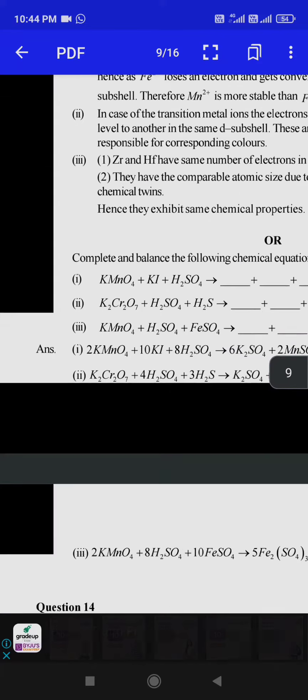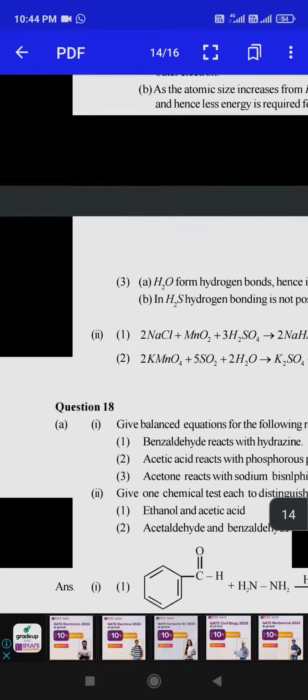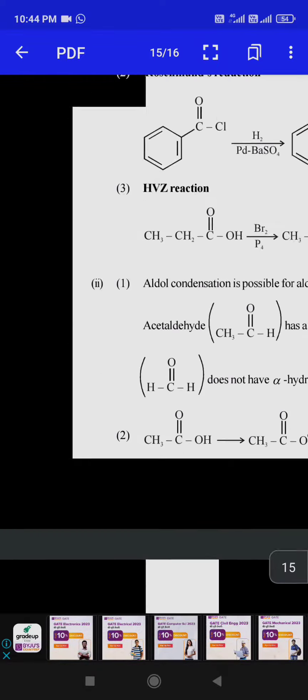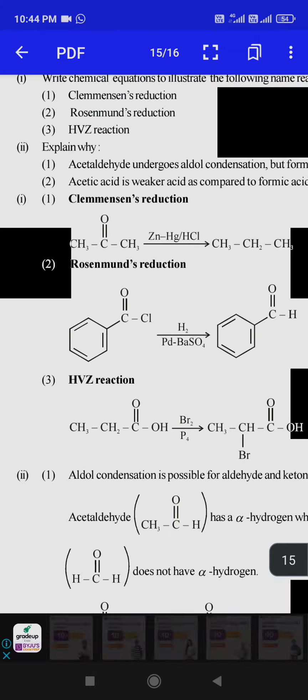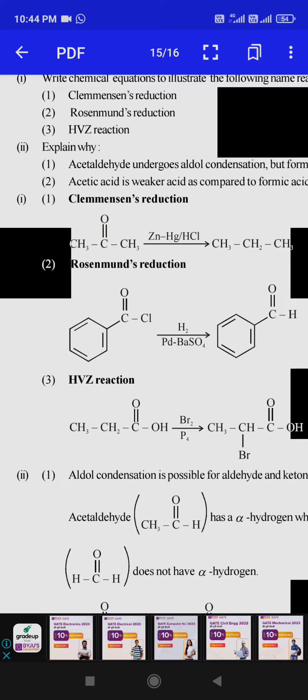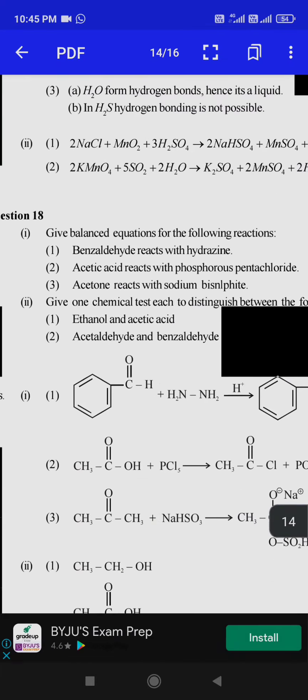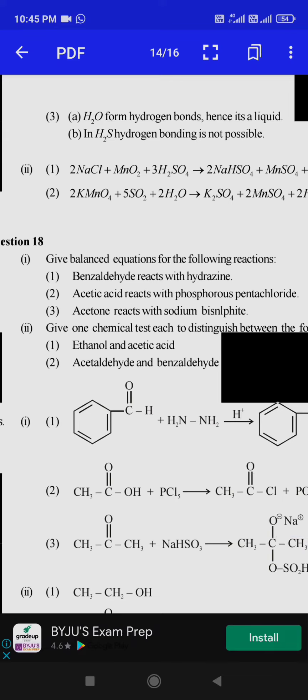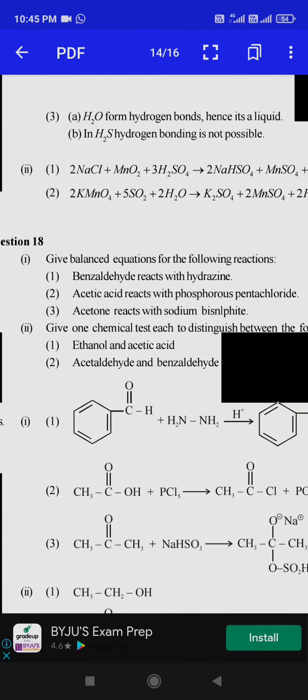You see, mostly questions are not in your syllabus this year. These include HVZ reaction and Rosenmund reduction from organic chemistry. Important conversions: benzaldehyde with hydrazine, acetic acid with phosphorus pentachloride, and other conversions.